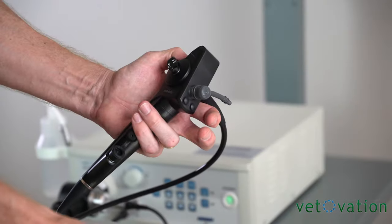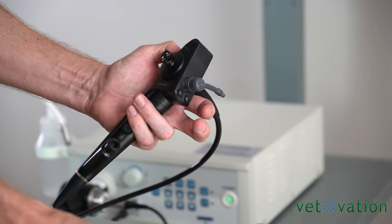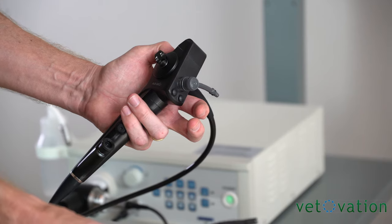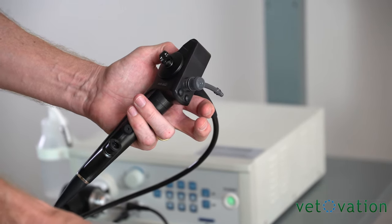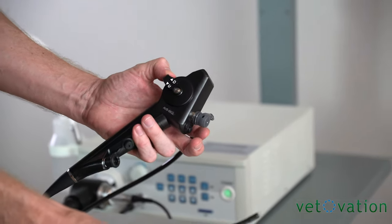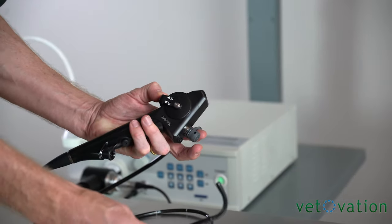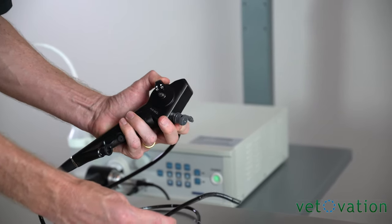The flexible rhinoscope, cystoscope, bronchoscope is one meter in length and 5.8 millimeters in outer diameter with a two millimeter working port. The tip of the retroflexion of the scope is controlled with the dial here so you can move it back and forth.